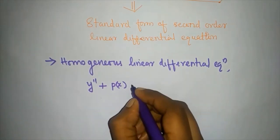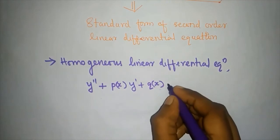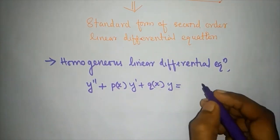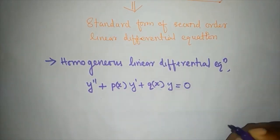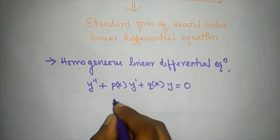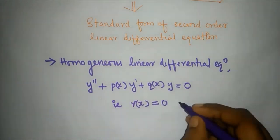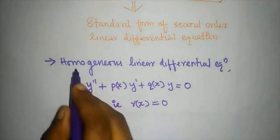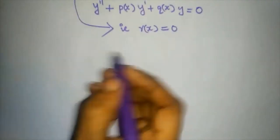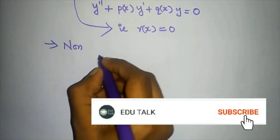The standard form is y'' plus P(x)·y' plus Q(x)·y equals zero. When R(x) equals zero, this is called a homogeneous equation.